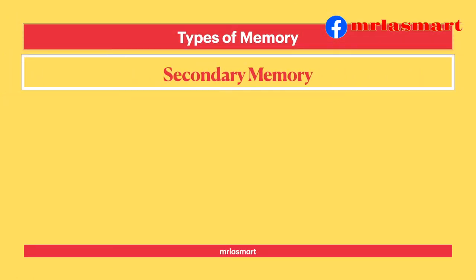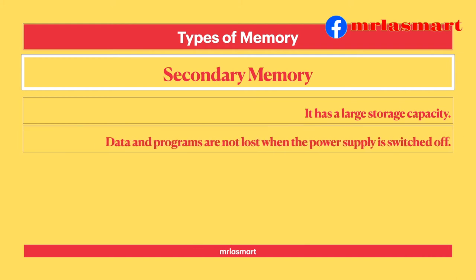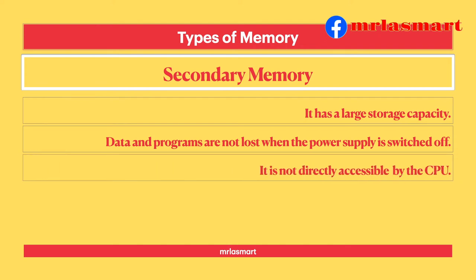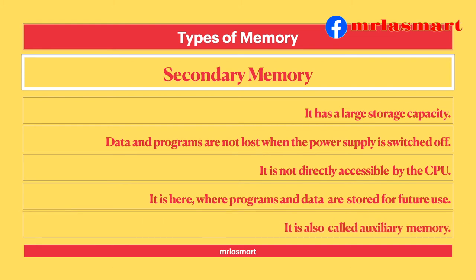Secondary memory has a large storage capacity. Data and programs are not lost when the power supply is switched off. It is not directly accessible by the CPU. It is where programs and data are stored for future use. It is also called auxiliary memory.